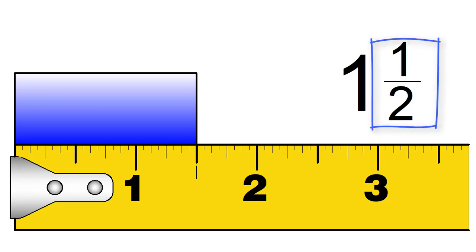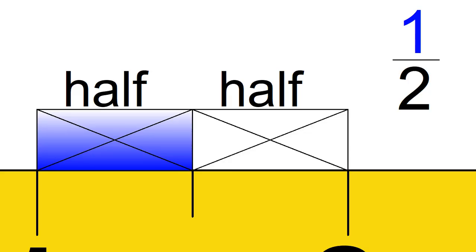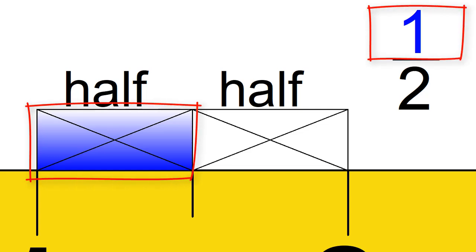And here, the measurement is one and a half inches. We can write this as one and one half. We write one half like this, one over two. One half is our first fraction. Each inch is divided into two halves. The one on top of our fraction means that our mark is at one of those two sides.